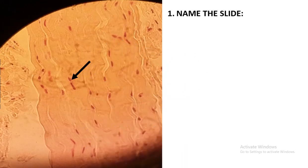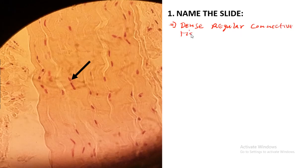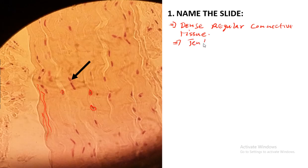The next slide — the question is: name the slide. If you look at this slide, you can give the answer as dense regular connective tissue. If you look at this tissue, you'll find wavy-like structures which are just the collagen fibers moving in a wavy motion. You can also give the answer as a tendon, but I would advise you put tendon in brackets.